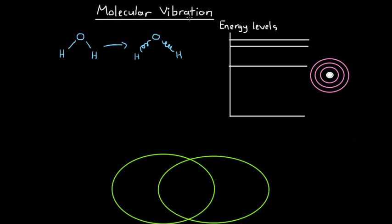When we talk about molecular vibration, it's the stretching, bending, or changing shape of the molecule that we're looking at. For example, this water molecule could vibrate so that it looks a little bit straighter, or it could go the other way and be further out. These spring-like covalent bonds are just changing length and changing direction.